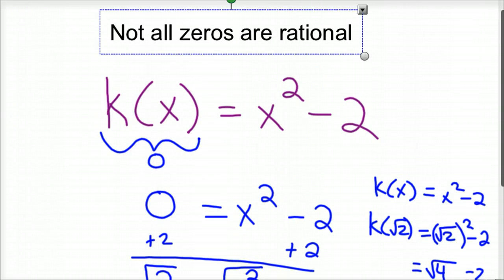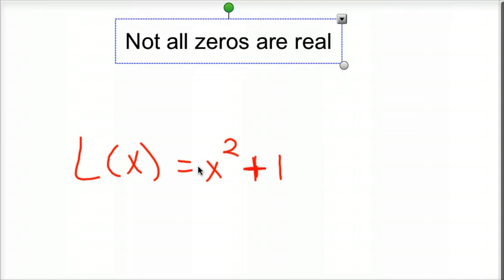Then you get to the next step, and not all zeros are real. Let's say L(x) = x² + 1. x² + 1, you could guess any number you want. There's no real number on the planet that would make a zero here. Because if you tried negatives, even if it was -1, when you square that, plus 1, that's 1 + 1, is 2. So there isn't a real number that does it.